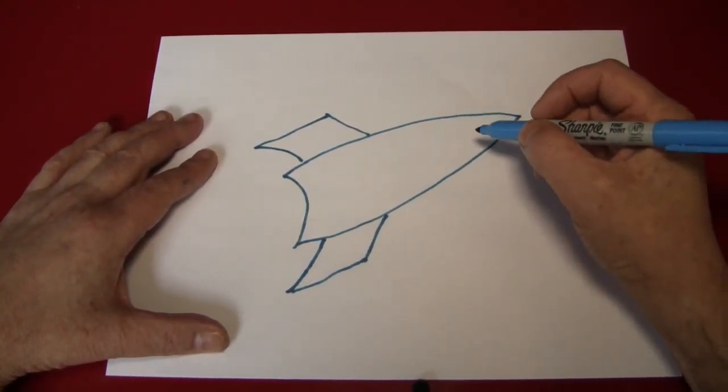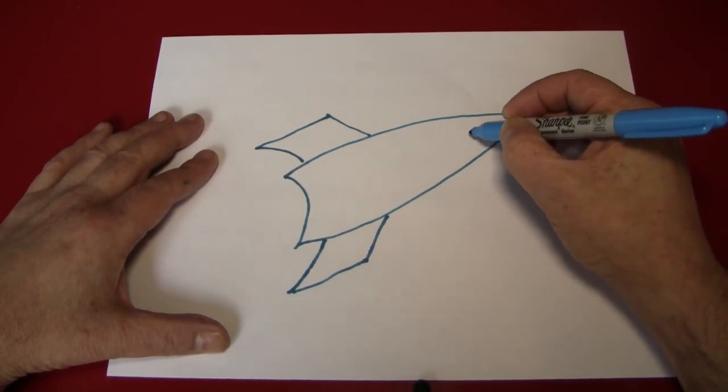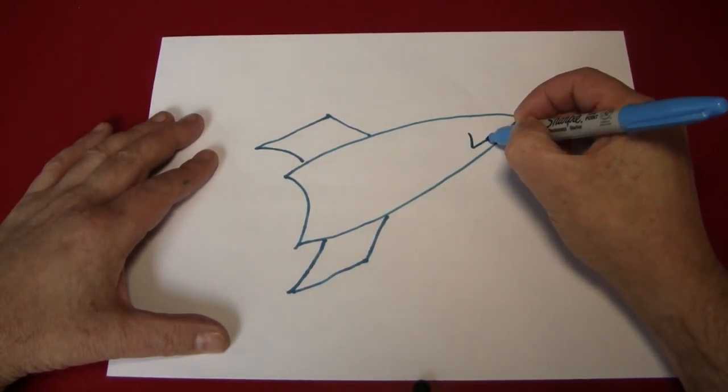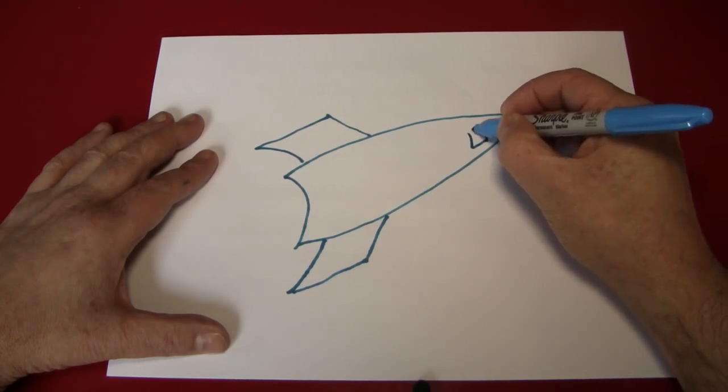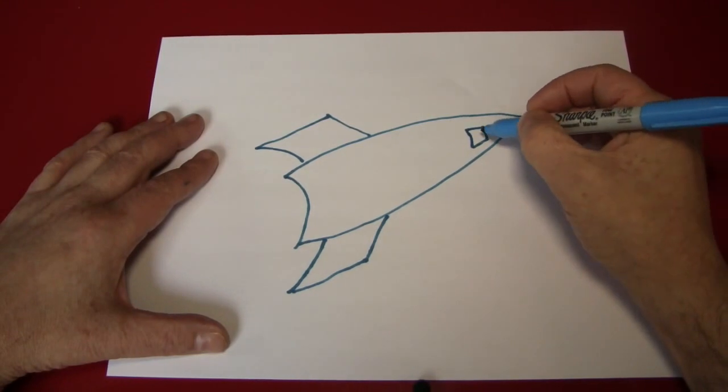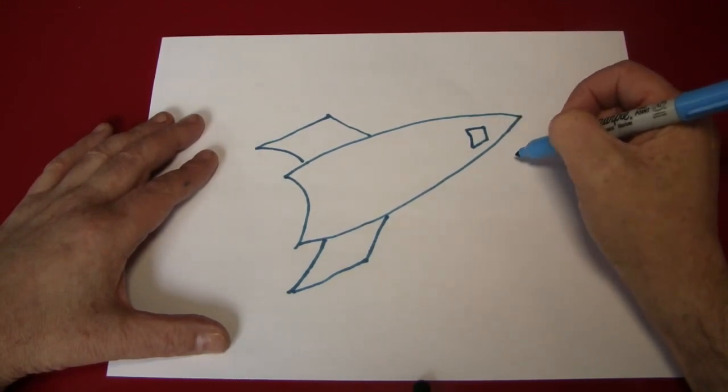Next, let's place a little window up here in the nose cone so we know where the astronauts are and so they can look out into space. I like to make the windows on a spaceship square, just like in an airplane.